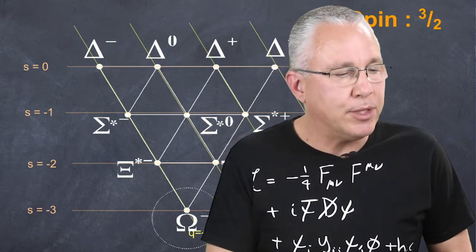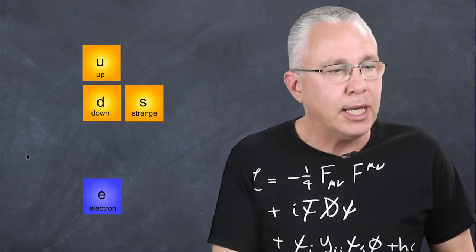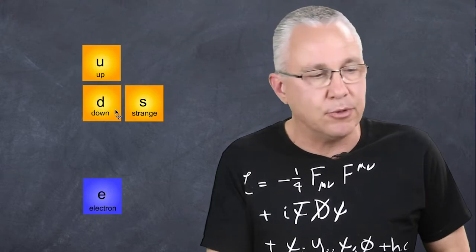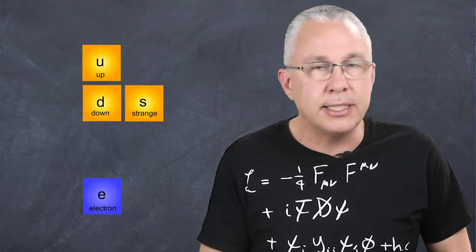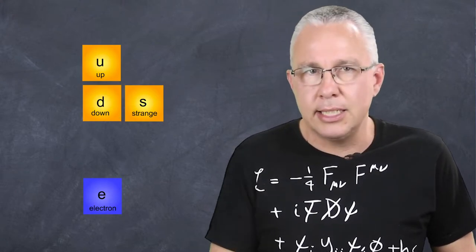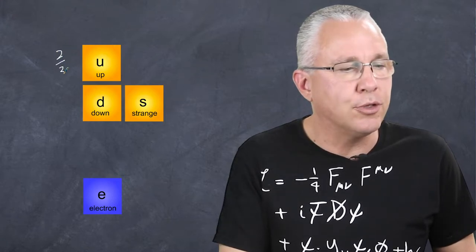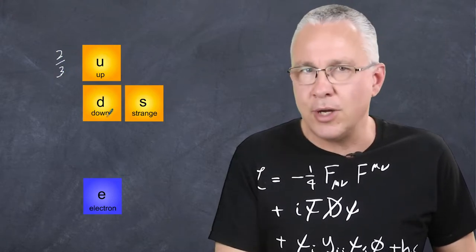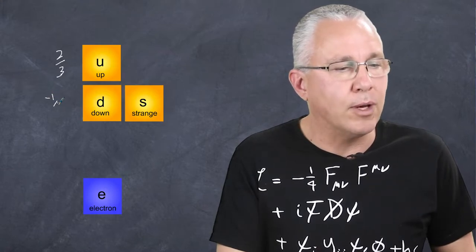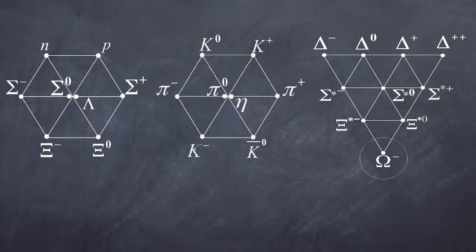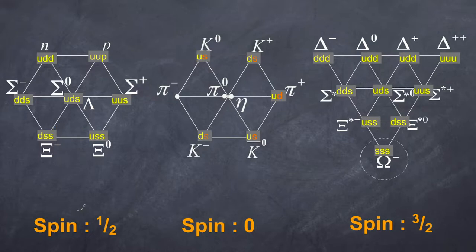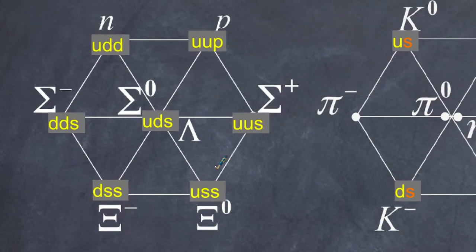From this model, he came up with the system called the quark model. What he developed was this idea of three different quarks: the up, the down, and the strange. He said the up quark has a charge of positive two-thirds, and the down and the strange quark had a charge of negative one-third. Using that principle, he was able to explain the combination of what we refer to as baryons and mesons. Baryons are made up of three quarks, they have a spin of one-half, and you can see the combinations he used.